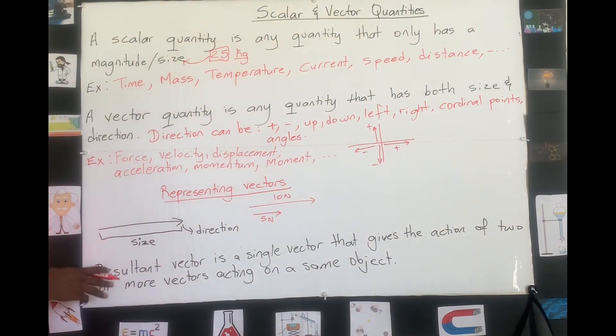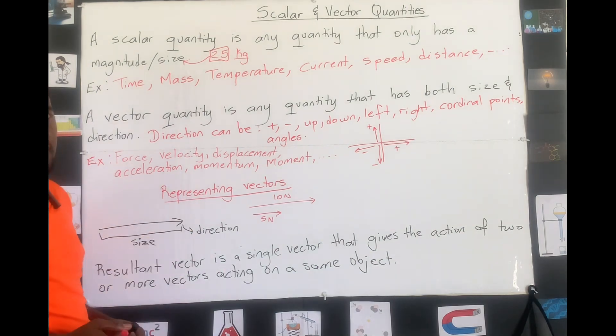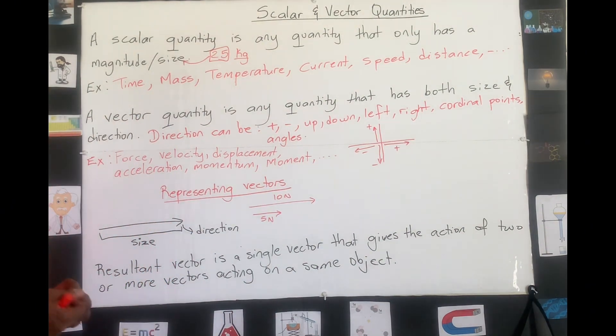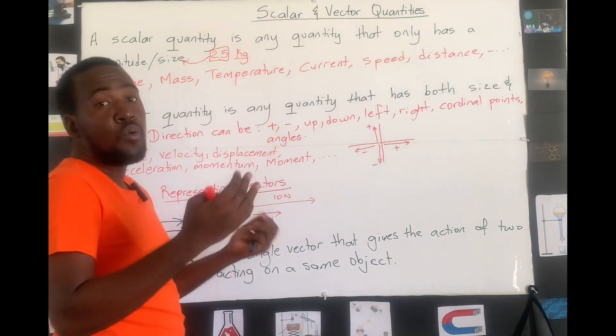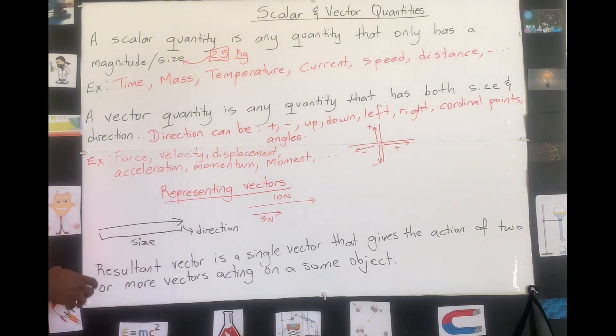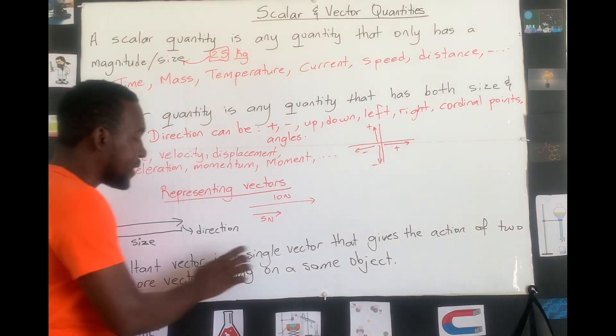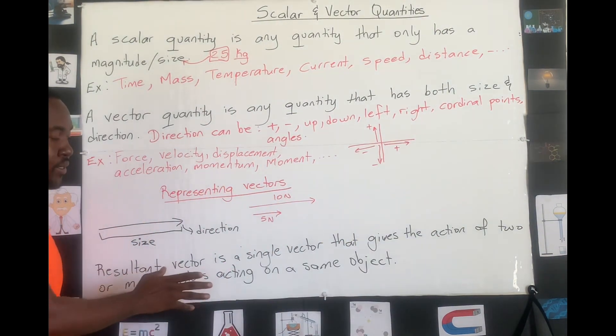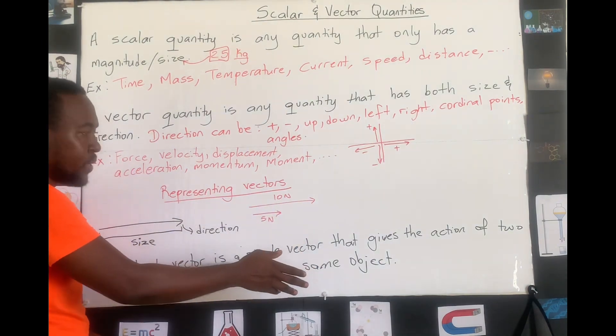In representing vectors, we will also understand that sometimes vectors are acting more than one on the same point or the same object. That's when we look at the term called a resultant vector. A resultant vector is just a single vector that gives you the action of two or more vectors acting on the same object.